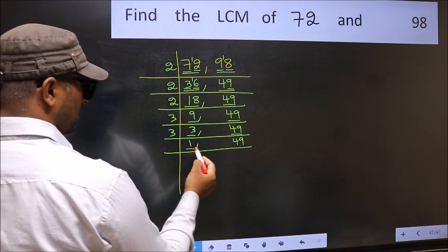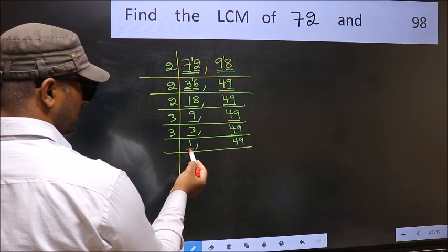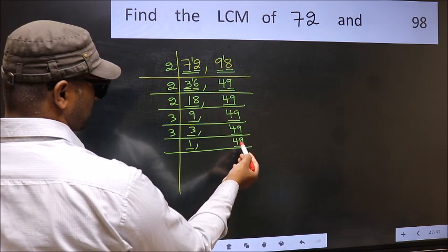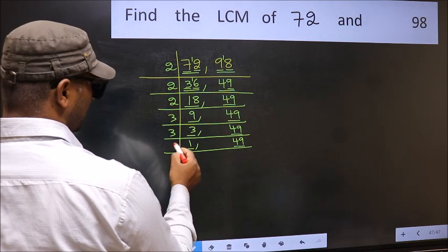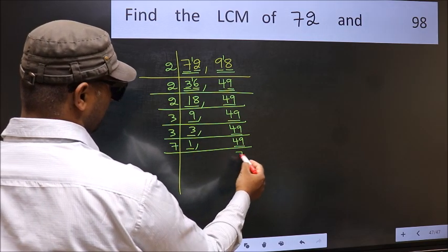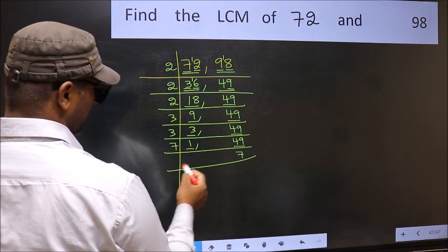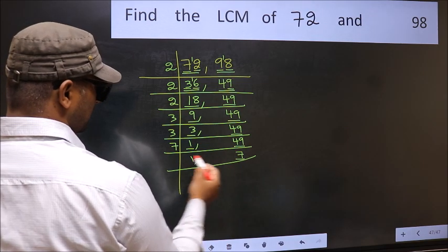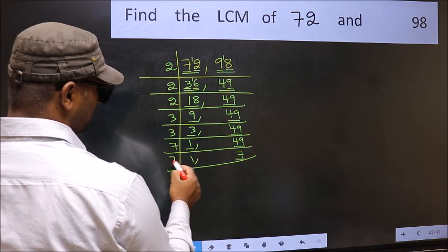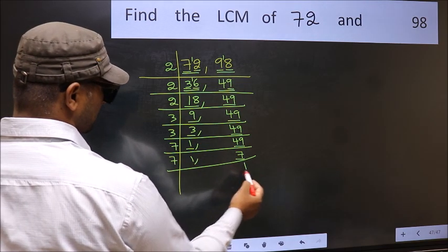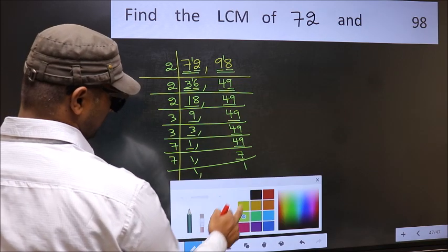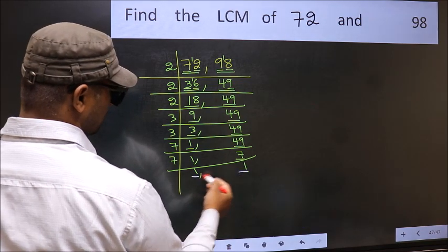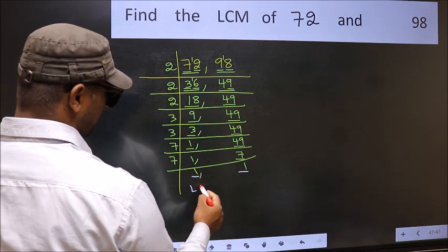We got 1 here, so focus on the next number, 49. 49 is 7 × 7 = 49. Now we have 7. 7 is a prime number, so 7 × 1 = 7. We got 1 in both places.